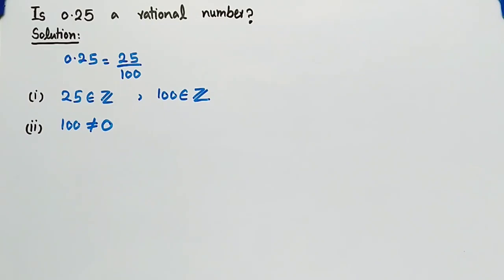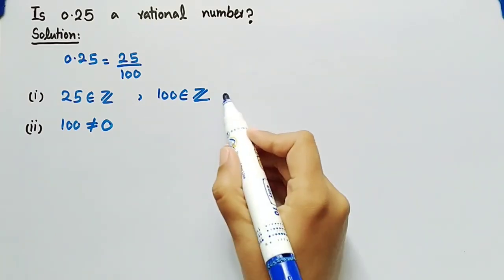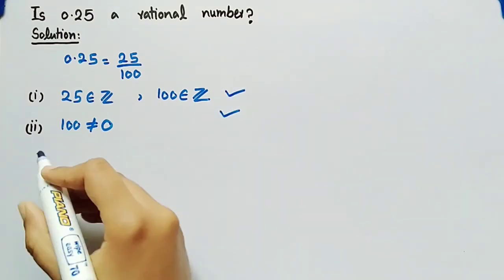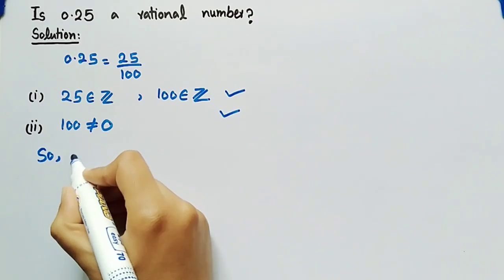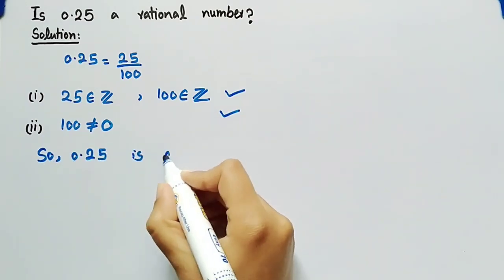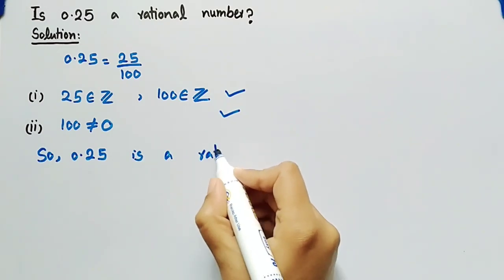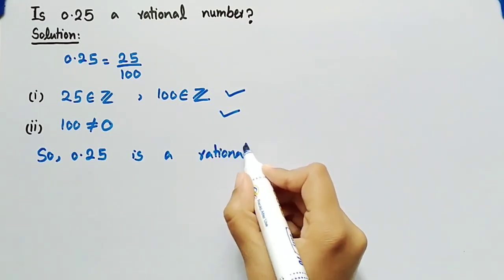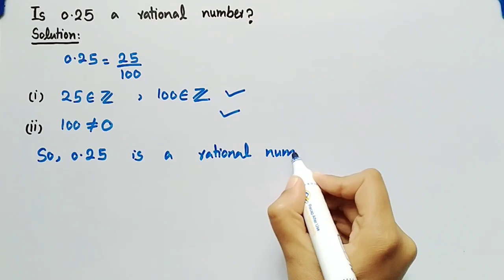We can clearly see that this number satisfies both conditions. Therefore, 0.25 is a rational number.